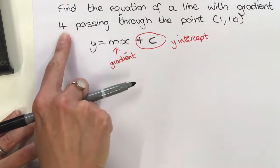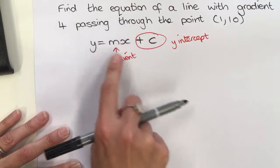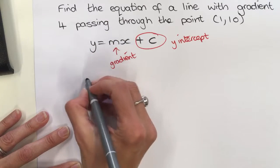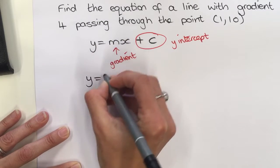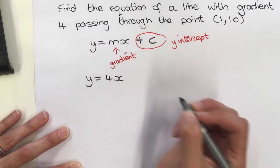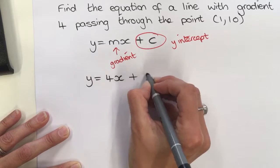In the question we are given that the gradient is 4, so straight away we can fill in y = 4x + c.